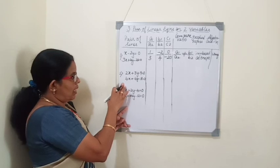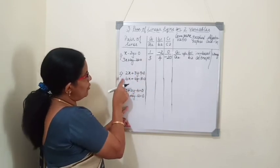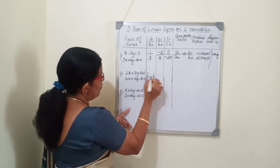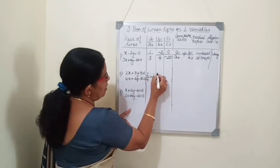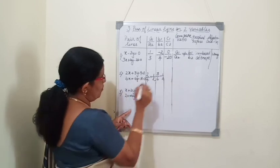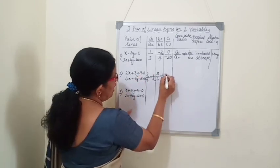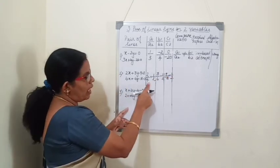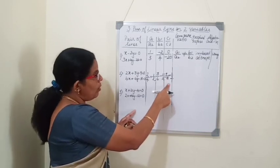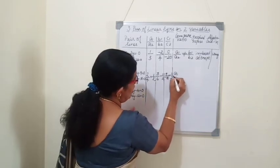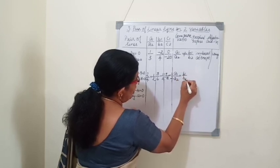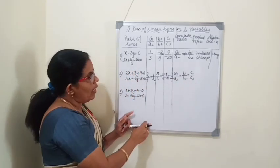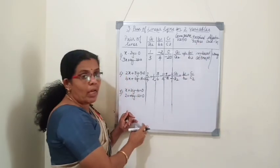Now we will see the second pair of linear equations. a1 by a2 is 2 by 4, which is 1 by 2. b1 by b2 is 3 by 6, which is also 1 by 2. c1 by c2 is minus 9 by minus 18, which is again 1 by 2. So here a1 by a2 equals b1 by b2 equals c1 by c2 — all three ratios are equal.